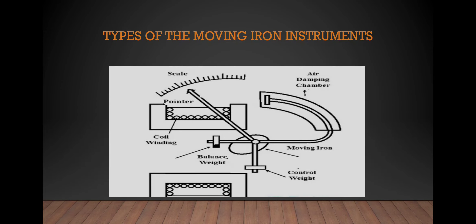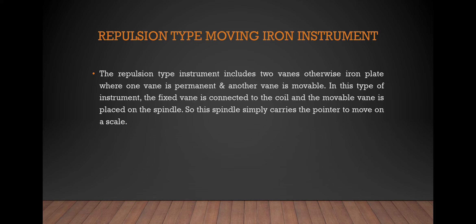This is the constructional diagram of moving iron instrument. Next one is a repulsion type instrument. It includes two vanes or iron plates.